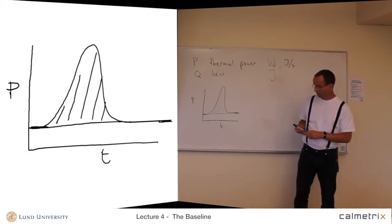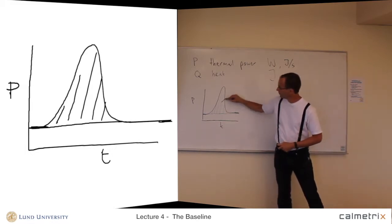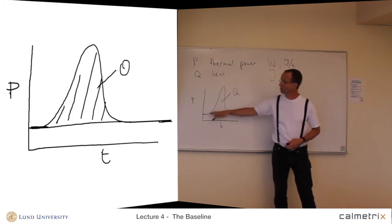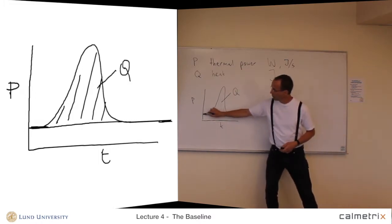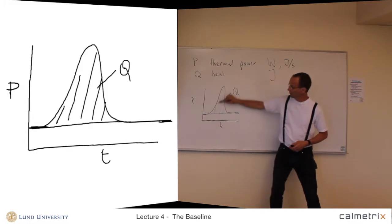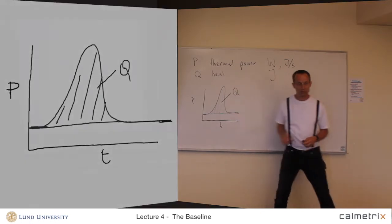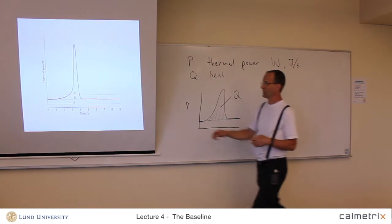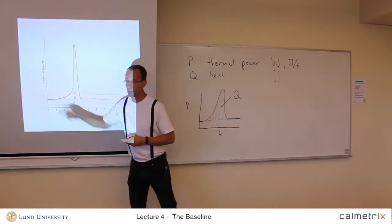If we want to evaluate how much heat this reaction produced, we need to know the baseline, and then integrate the peak over the baseline to get Q. So in this case it's very important to know the baseline, but it's easy to take the baseline directly from the measurement.